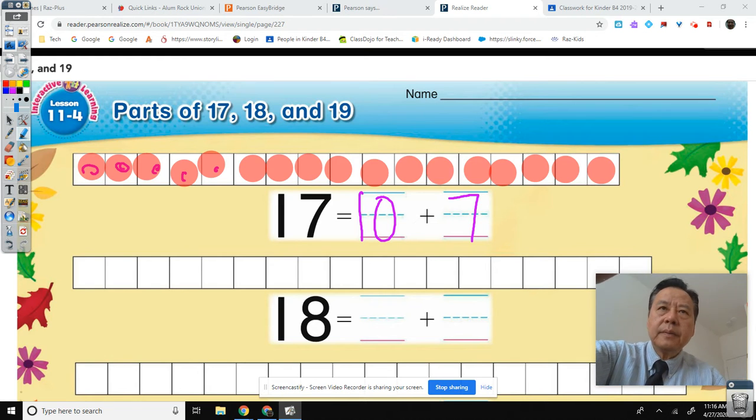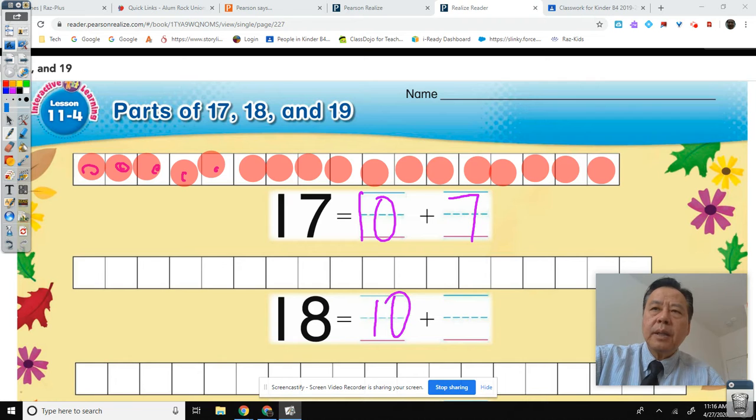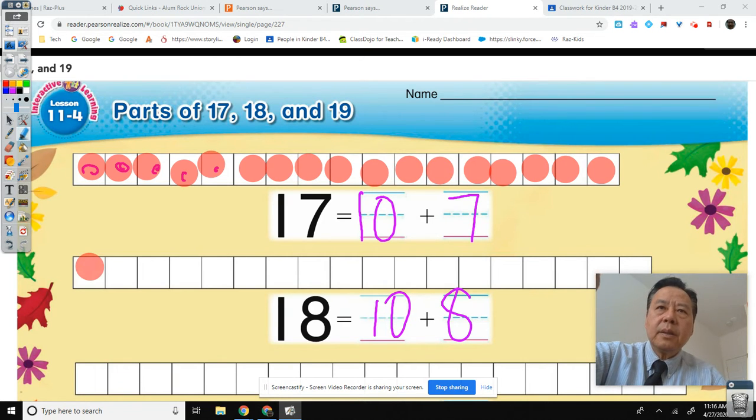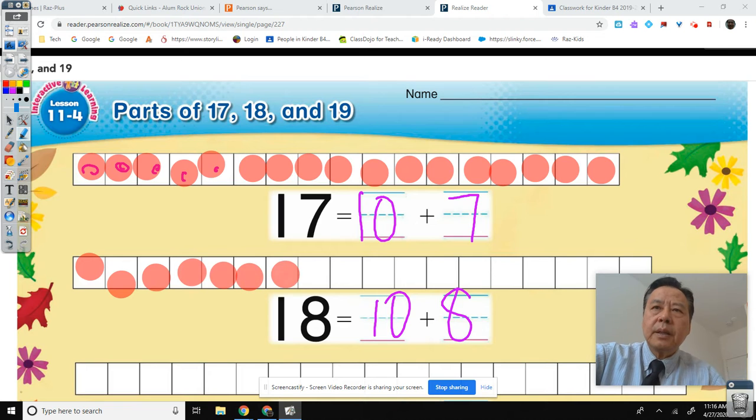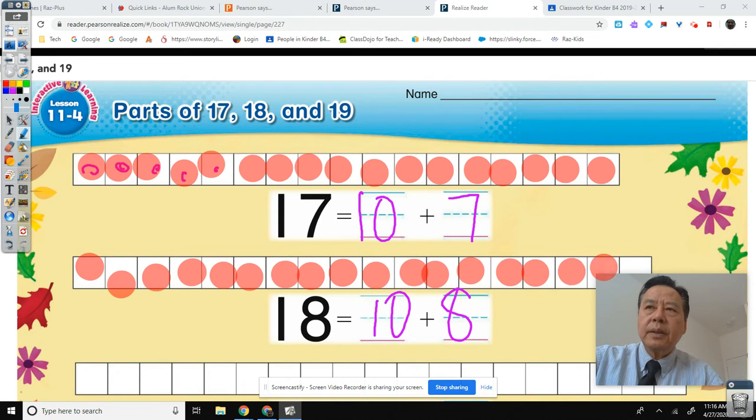18 is equal to 10 plus what? You got it, 8. 1, 2, 3, 4, 5, 6, 7, 8, 9, 10, 11, 12, 13, 14, 15, 16, 17, 18.